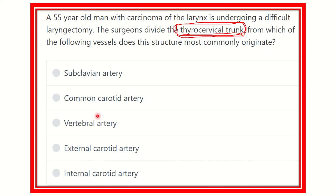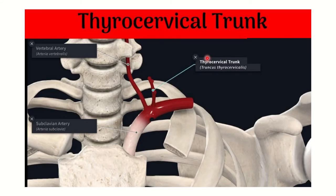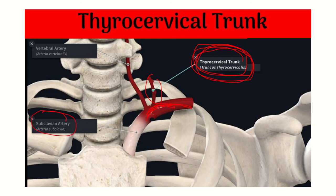We have to find out from which artery the thyrocervical trunk arises. In this picture here we can see the thyrocervical trunk. This thyrocervical trunk is divided during the operation for carcinoma of the larynx. Tracing it back, we can see this thyrocervical trunk arises from this vessel — and we know this vessel is the subclavian artery.